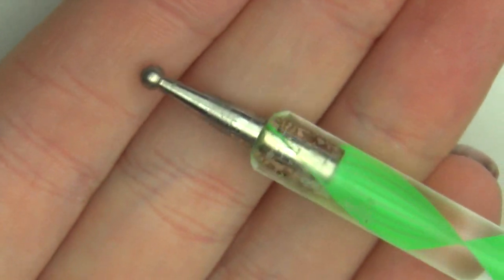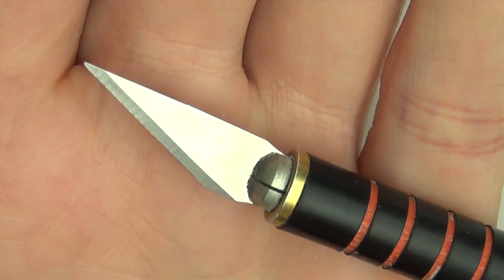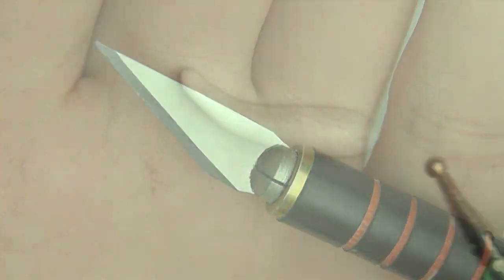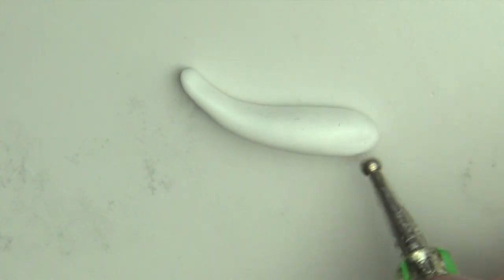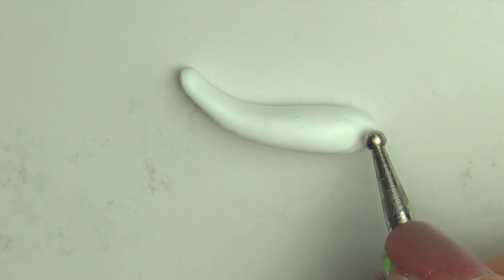Then get out your sculpting tools. I'm using a dotting tool, a needle tool and an exacto knife. I don't know too much about fish anatomy so I found some reference pictures online of koi fish from different angles and kind of sculpted based on that.